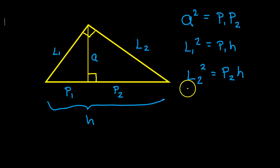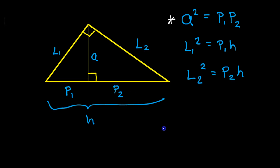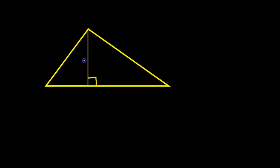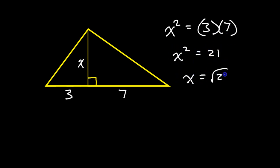I hope you wrote the formulas down because I'm going to wind up sort of erasing them. Let's focus on this top formula first — the one that involves the altitude and the two parts. This is saying that the altitude squared is equal to part times part. For example, if this was X, this was 3, and this was 7, that formula would say X squared is equal to 3 times 7. So X squared would equal 21 and X would wind up being the square root of 21.